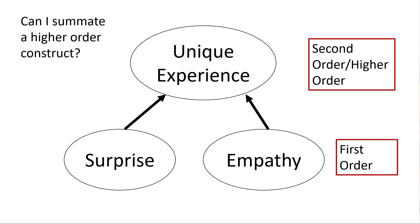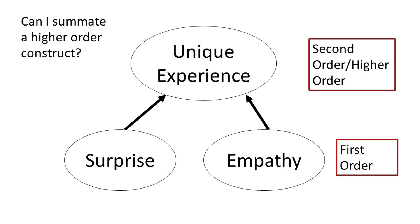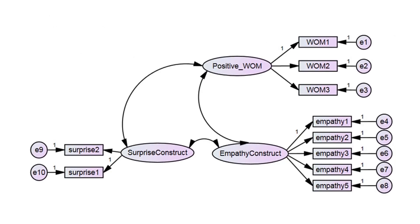Another question I get is how to address confirmatory factor analysis with a higher-order construct. The way you do that is to assess it at the first-order level — you really don't look at the relationships from the first order to the second order in a CFA. Amos treats those relationships like structural relationships even though conceptually they're measurement. In a CFA you look specifically at the items for each first-order construct — like surprise, empathy, and positive word of mouth — but you do not assess the first-order to second-order relationship; that takes place on the structural model side.